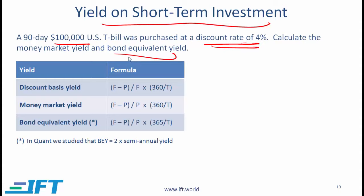Again, these terms should look familiar. What does the discount rate of 4% mean? The return that you are getting is not 4% because the discount yield or discount rate refers to a discount relative to face value. So we can use this formula to come up with how much you are paying for the security, and then based on how much you are paying, you can calculate the money market yield and the bond equivalent yield. So let's do the calculation.